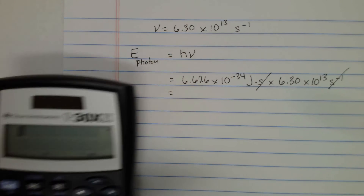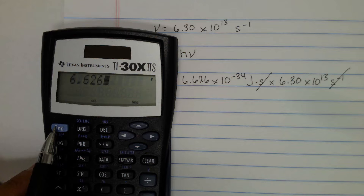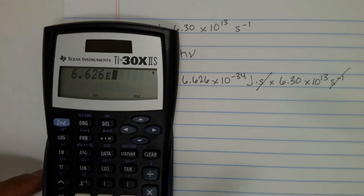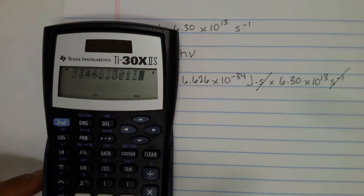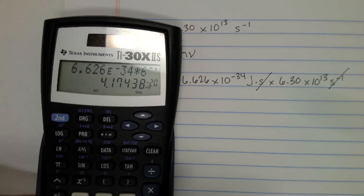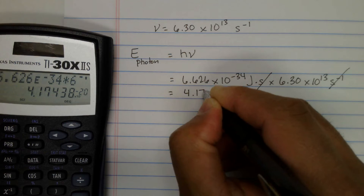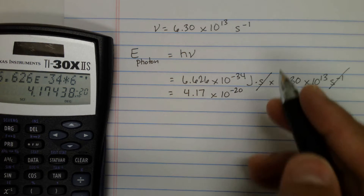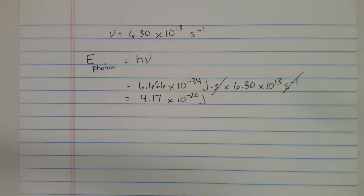Let's plug this into the calculator: 6.626 times 10 to the negative 34, using the exponential function, multiplied by 6.30 times 10 to the positive 13. The answer is 4.17 times 10 raised to the minus 20, and the unit is joules.